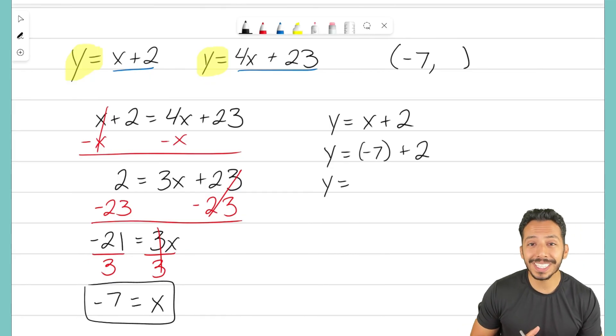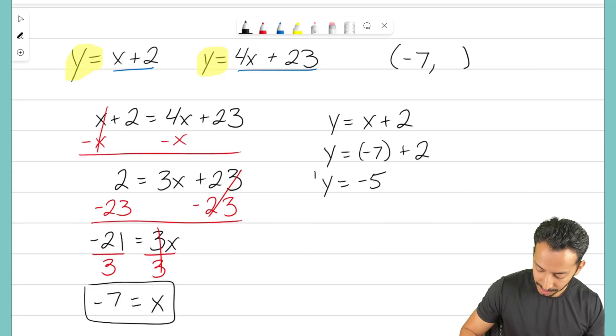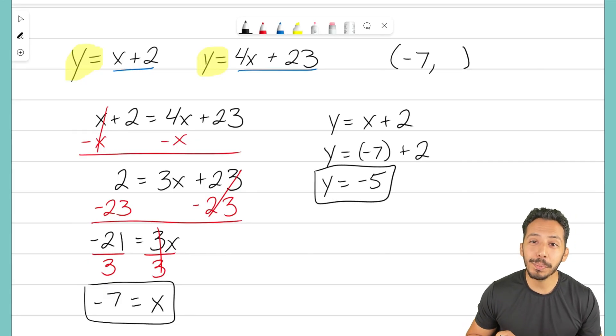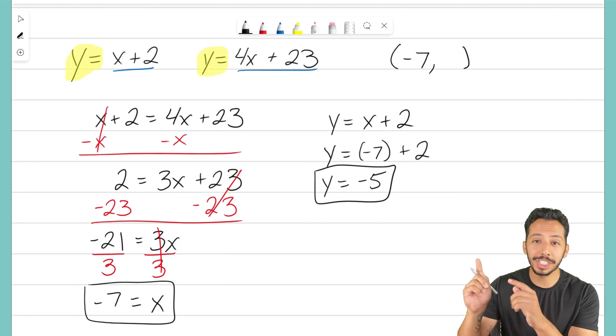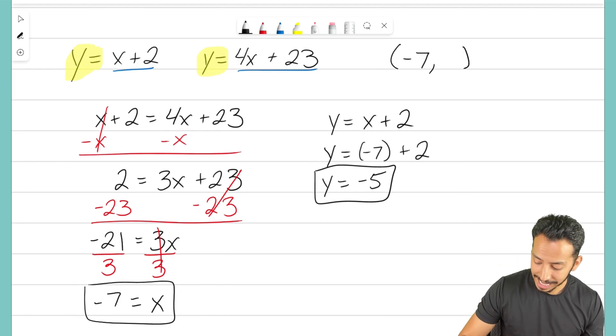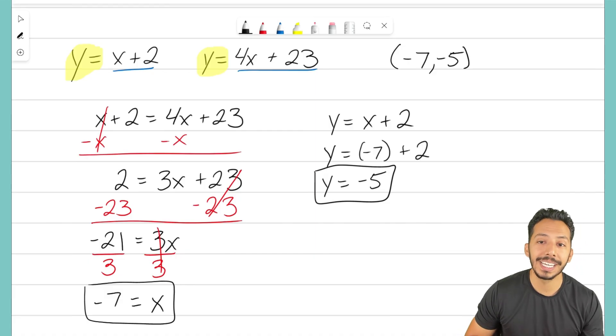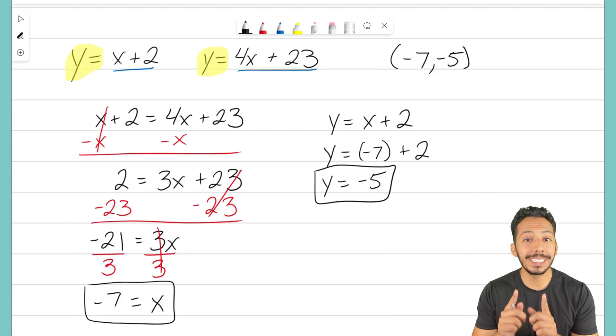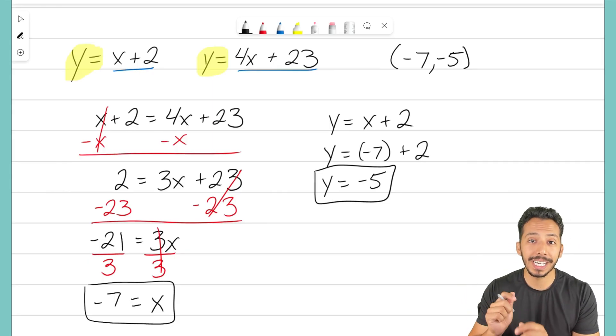Get a calculator out if you struggle with negatives. But negative 7 plus 2 gives us negative 5. So the coordinate point where those two equations intersect, those two lines intersect, is the point negative 7, negative 5. And we did that using the equal values method. We did it because both equations there equaled y.